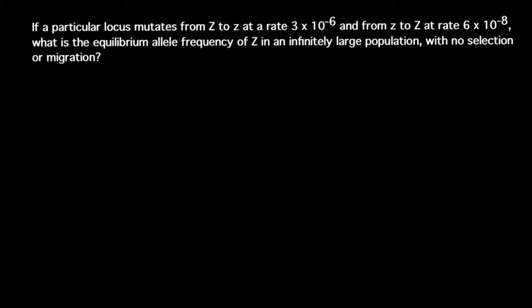In order to solve this problem, everything you have to know is this formula: equilibrium allele frequency, or p̂, equals ν divided by μ plus ν. Now let's analyze our data in this formula.